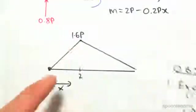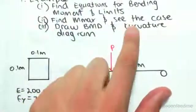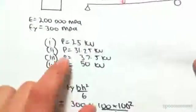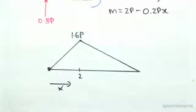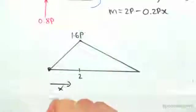So we found the maximum bending moment is 1.6P. Now we need to see which case we're in. We're going to be dealing with four different cases, so let's deal with number one first.